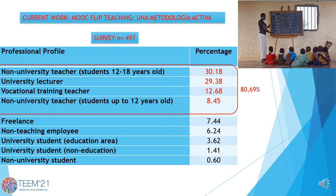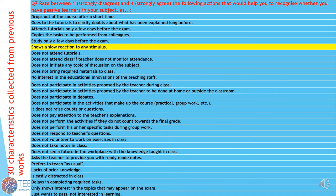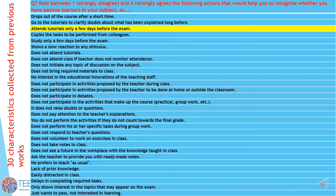With respect to their professional profile, more than 80% of participants who filled out the survey were teachers from different levels: students up to 12 years old, from 12 to 18 years old, vocational training, and university teachers. 30 characteristics of passive students were collected from previous works and included in this survey — from generic characteristics such as 'student shows a slow reaction to any stimulus,' to specific ones such as 'student attends tutorials only a few days before the exam.'